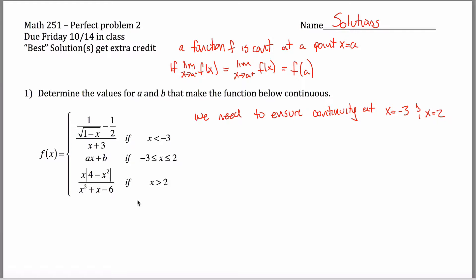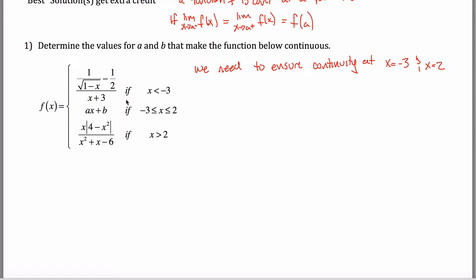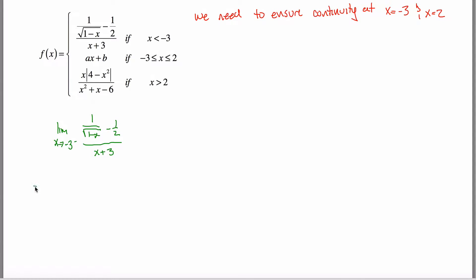I want to make sure the height of the function is the same at the boundary points. I'll first figure out the limit as x approaches -3 from the left-hand side. Since I'm approaching -3 from the left, I'm slightly less than -3, so I follow the first rule: the limit of 1 over the square root of 1 minus x, minus 1/2, divided by x + 3. Plugging in -3 gives 0/0, so we'll evaluate this algebraically by getting an (x + 3) to cancel from the numerator.